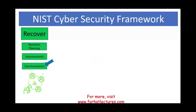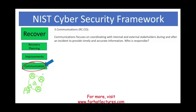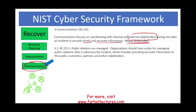Last but not least is the communication category. Communication focuses on coordinating with internal and external stakeholders — especially external stakeholders — during and after a cybersecurity incident, to provide timely and correct information. Do you have a person responsible for this job? You might have a public relations department. Organizations should have a plan for managing public relations after a cybersecurity incident, providing accurate and timely information to customers, partners, and stakeholders. If you don't have a department, identify a designated person rather than trying to find one in the midst of a cybersecurity attack.